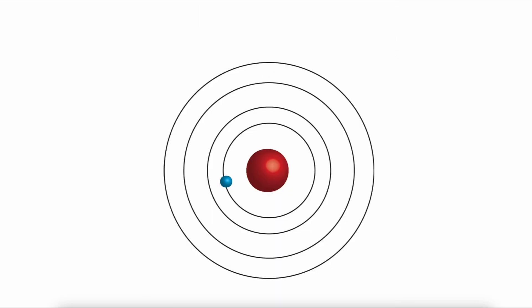This right here is the Bohr model of the hydrogen atom. He proposed that an atom has a central nucleus containing protons and neutrons, and orbiting around this nucleus are electrons. Importantly, he proposed that the electrons orbiting around an atom belong to different energy levels, or shells.